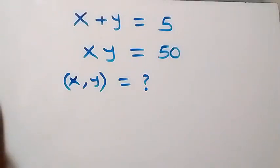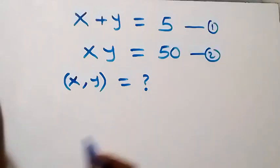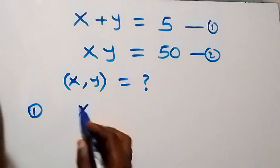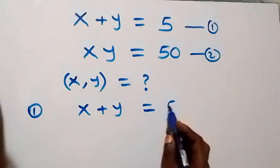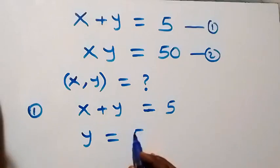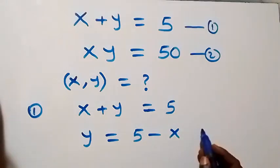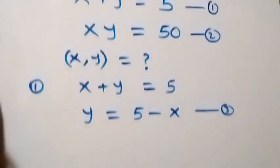Hello, you are welcome. How to solve x and y in this nice system of equations. Let's label this as equation one and this as equation two. From equation one, which is x plus y equals five, let's make y the subject. Taking x to that side, we now have y equals five minus x. Let's label this as equation three.